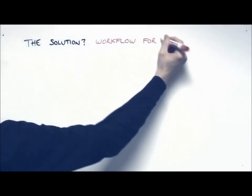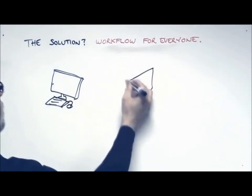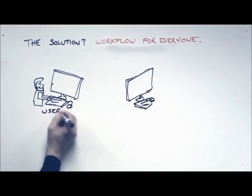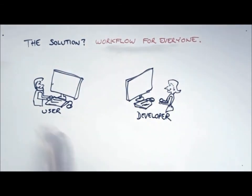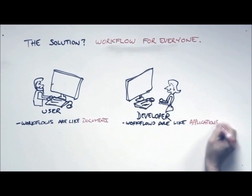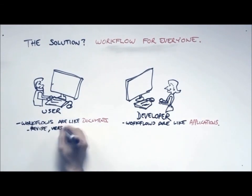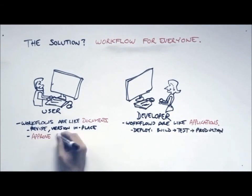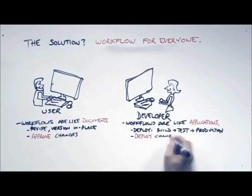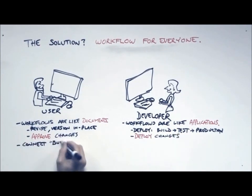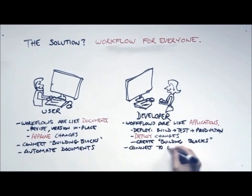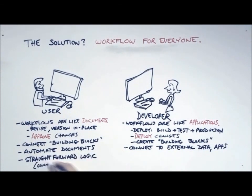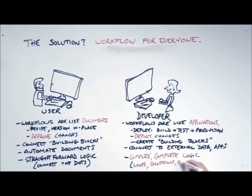You design workflow for everyone. You begin by creating great tools that allow users to create many of the workflows they need all by themselves, and then you add to that extra functionality that developers need in order to do professional work. They're not the same, mind you. Users tend to think of workflows as process documents, whereas developers think of them as applications. Users will revise workflows like documents — make changes in place, circulate them for approval. Developers will put them through build, test, production deployment cycles. Users will generally want to string together building blocks they know and understand, whereas developers will in many cases create building blocks of their own. Users might automate documents; developers will connect to apps and data in other places. Users will probably draw linear logic; developers need to model complex, complete logic, including looping, states, and such.